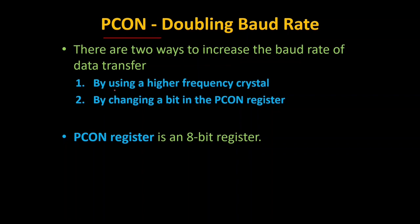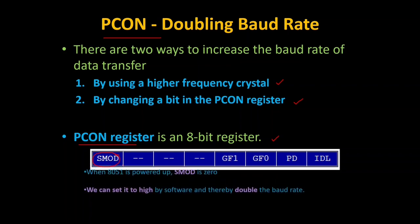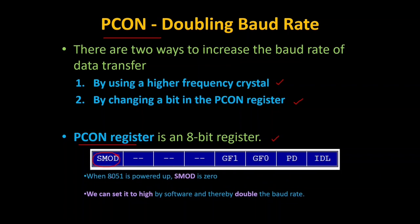By using a higher-frequency crystal we can increase the baud rate, or we can use the PCON register to increase it. PCON is an 8-bit register, and for this experiment only the SMOD bit is relevant. When the 8051 is powered up, SMOD defaults to 0, so we have not needed to go deep into the PCON register so far.